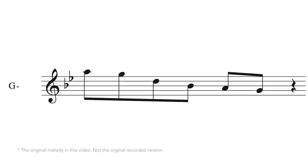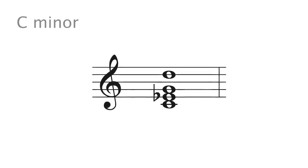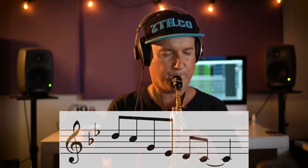Now task two: we need to construct and play the Cry Me A River lick starting on D. The original melody starts on the 9th of the minor. We need to do some detective work — what minor chord has D as the 9th or 2nd? D is the 2nd or 9th of C minor. Here then is the Cry Me A River lick starting on D, and now that same lick over the A minor 7 flat 5 chord.